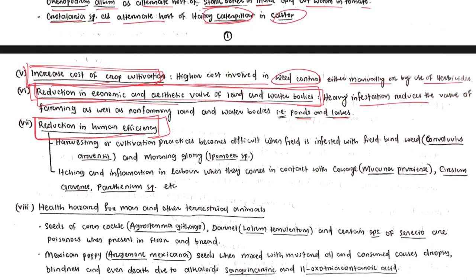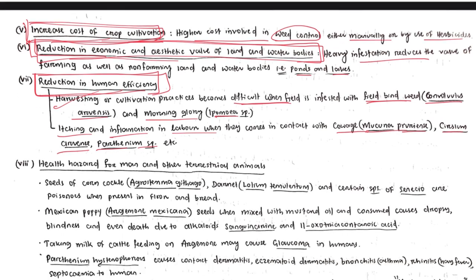Weeds reduce human efficiency in agricultural activities. Harvesting or cultivation becomes difficult when fields are infested with field bindweed (Convolvulus arvensis) or morning glory (Ipomoea species), whose tendrils closely wrap around crop plants making removal very difficult. Certain weeds like cowage (Mucuna pruriens) and Parthenium species cause itching and dermatitis when laborers come in contact with them, reducing labor efficiency.